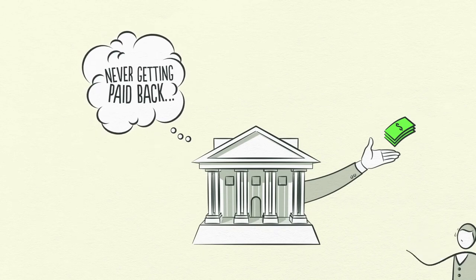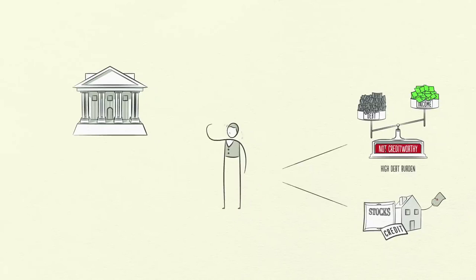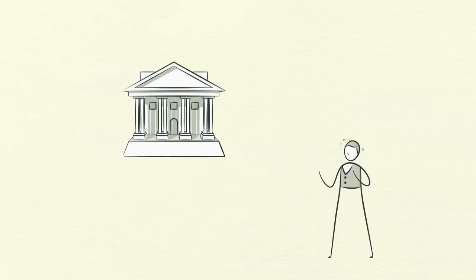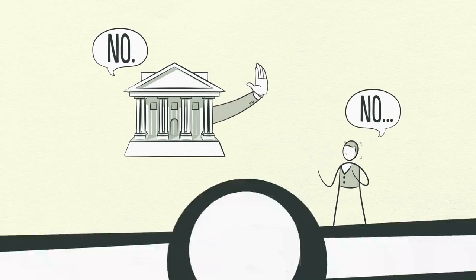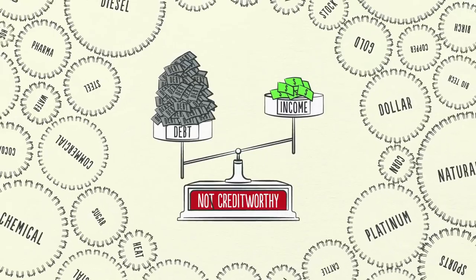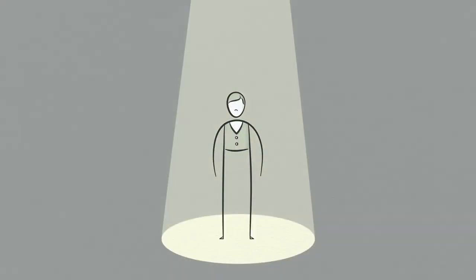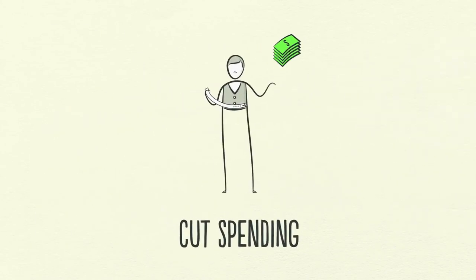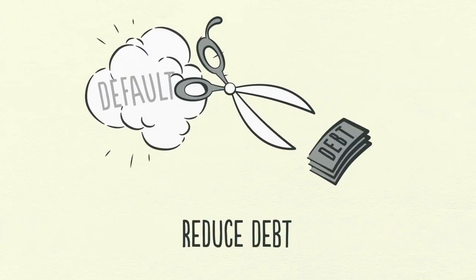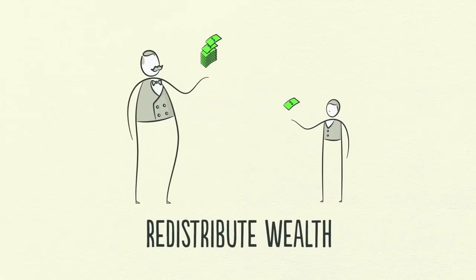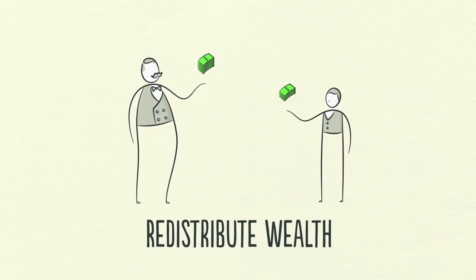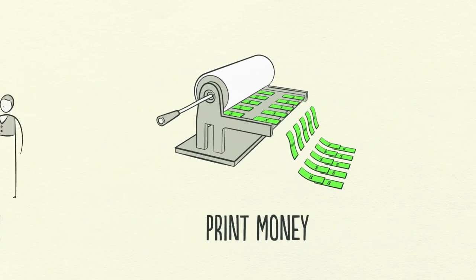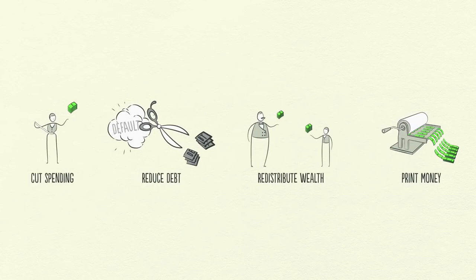Lenders realize that debts have become too large to ever be fully paid back. Borrowers have lost their ability to repay and their collateral has lost value — they feel crippled by the debt and don't even want more. Lenders stop lending, borrowers stop borrowing. So what do you do about a deleveraging? The problem is debt burdens are too high and they must come down. There are four ways this can happen: one, people, businesses, and governments cut their spending; two, debts are reduced through defaults and restructurings; three, wealth is redistributed from the haves to the have-nots; and four, the central bank prints new money. These four ways have happened in every deleveraging in modern history.